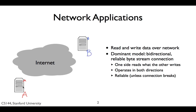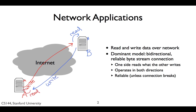So program A, running on computer A, can write data, which goes over the network, such that program B, running on computer B, can read it. Similarly, program B can write data that program A can read. There are other modes of communication, which we'll talk about later in the course, but a reliable bi-directional byte stream is by far the most common one used in networks today.